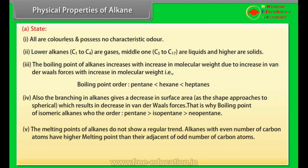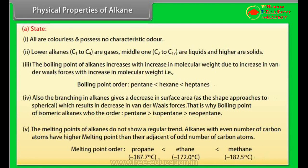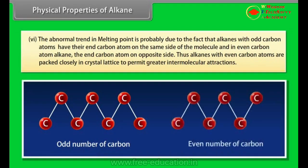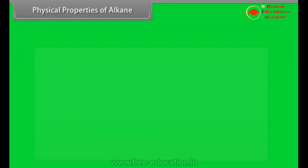That is why boiling point of isomeric alkanes: pentane is greater than isopentane is greater than neopentane. 5. The melting points of alkanes do not show a regular trend. Alkanes with even number of carbon atoms have higher melting point than their adjacent of odd number of carbon atoms. Melting point order: propane is less than ethane is less than methane. 6. The abnormal trend in melting point is probably due to the fact that alkanes with odd carbon atoms have their end carbon atoms on the same side of the molecule and in even carbon atom alkanes, the end carbon atoms on opposite side. Thus alkanes with even carbon atoms are packed closely in crystal lattice to permit greater intermolecular attractions.